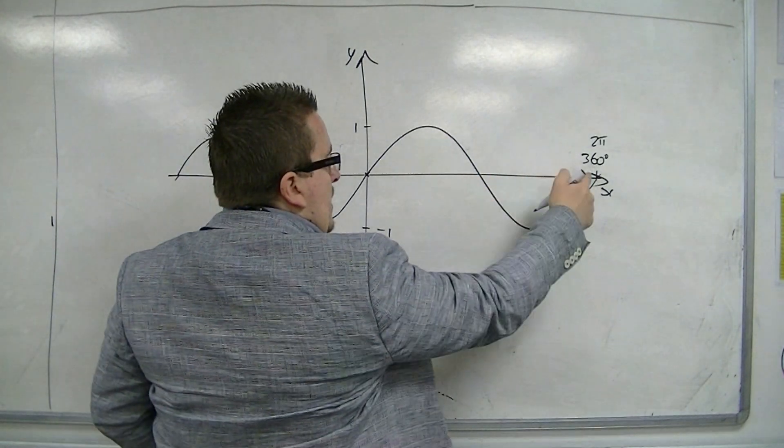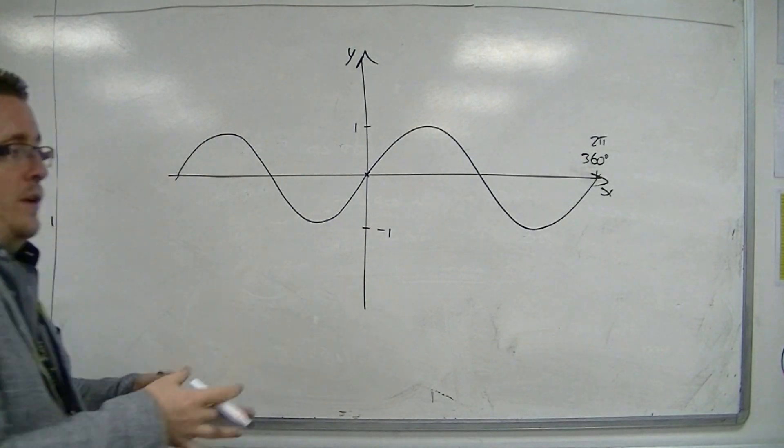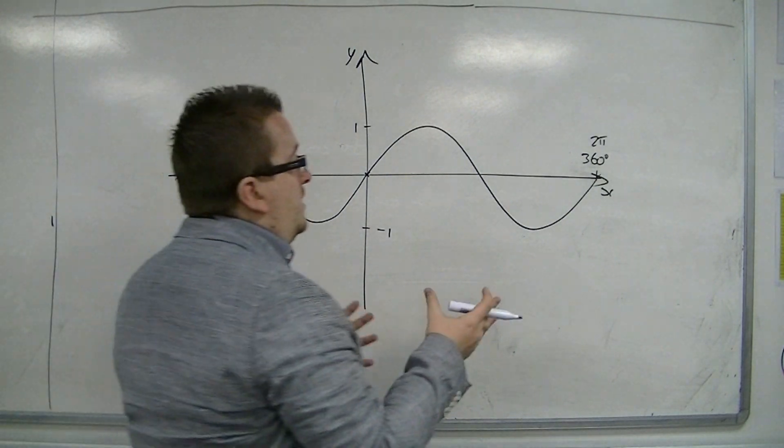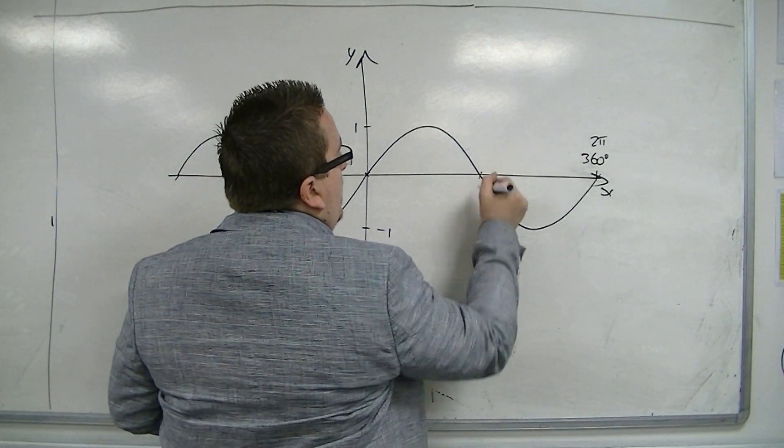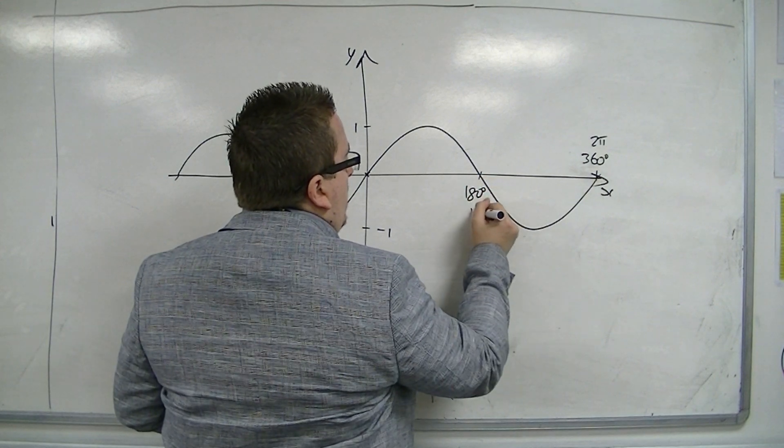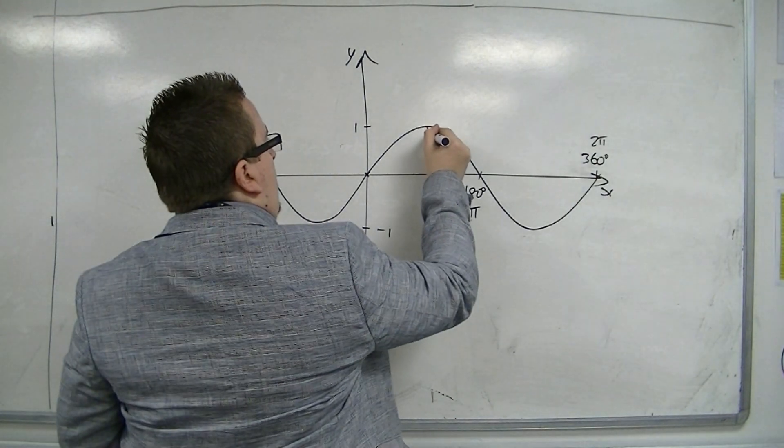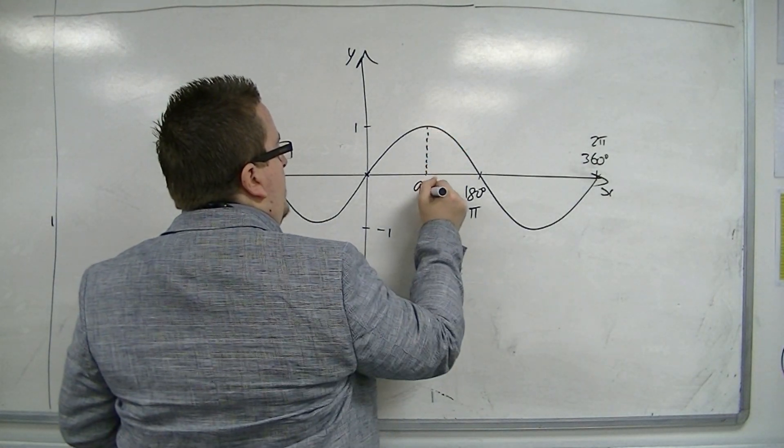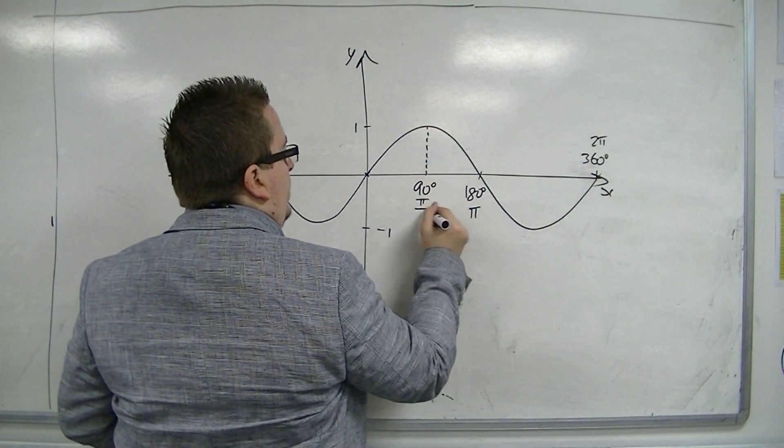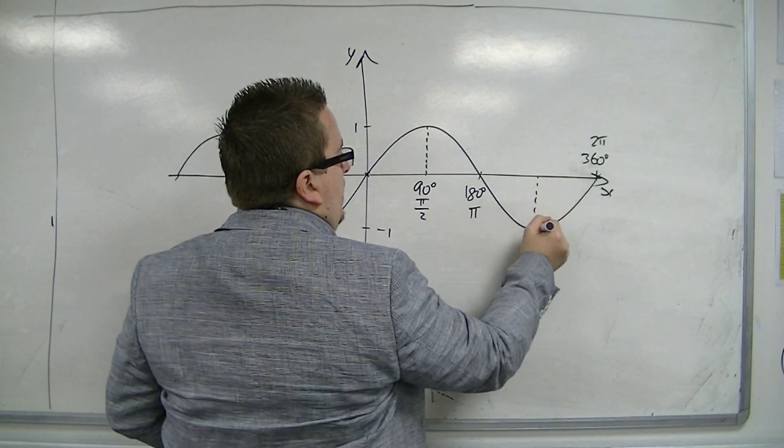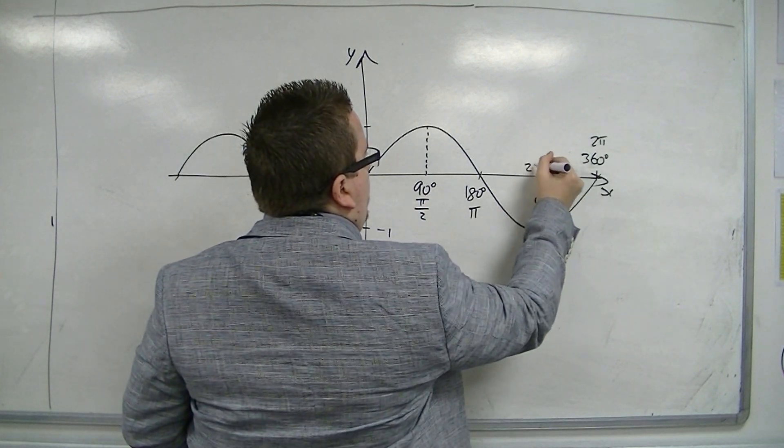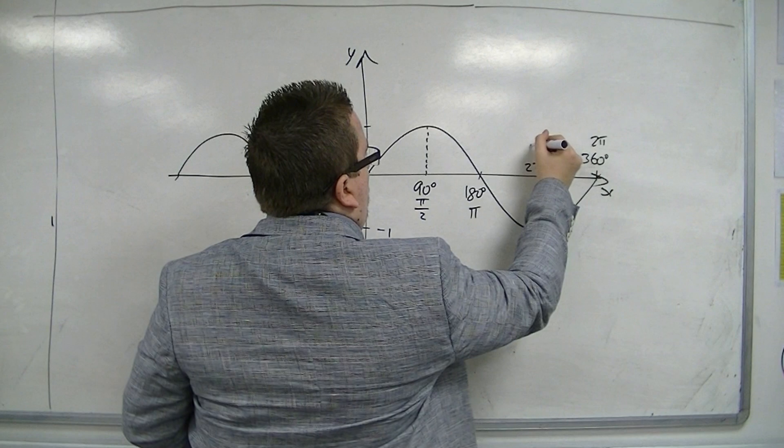If that's 360, then it also contains all this symmetry that we're going to be able to utilize. That is halfway, so that's 180, or in radians, pi. It hits its maximum at 90 degrees, or pi over 2. It hits its minimum at 270 degrees, or 3 pi over 2.